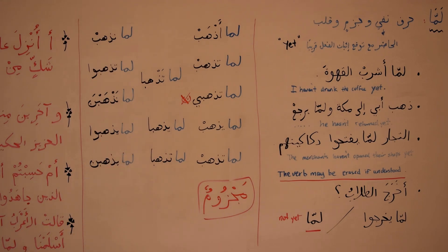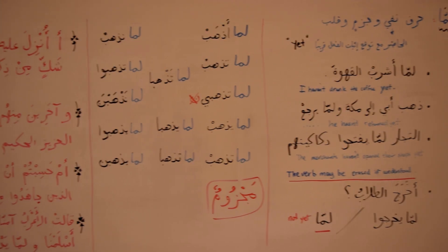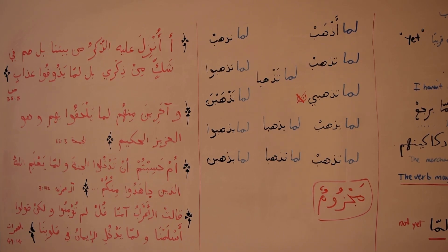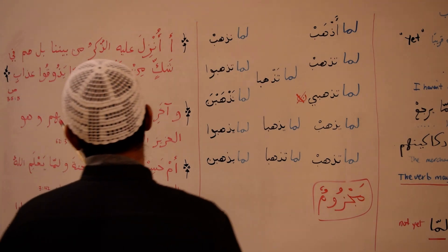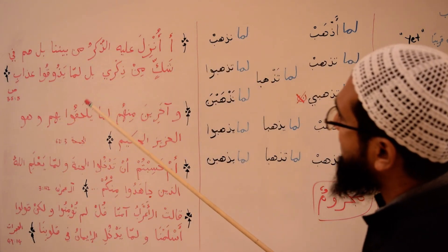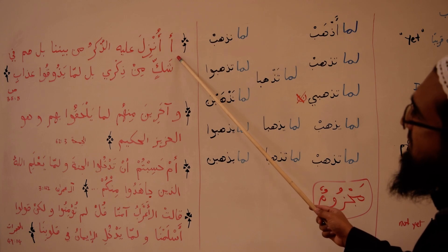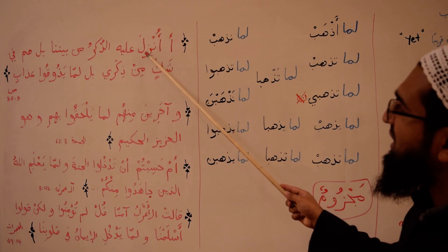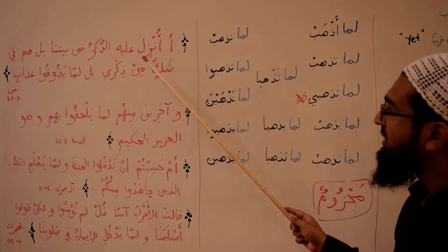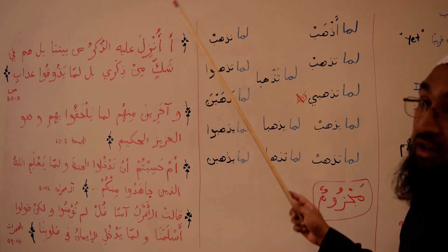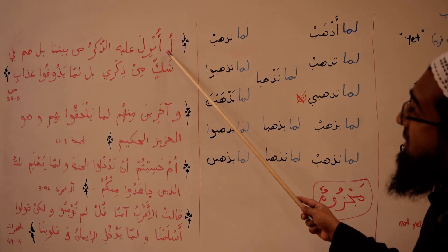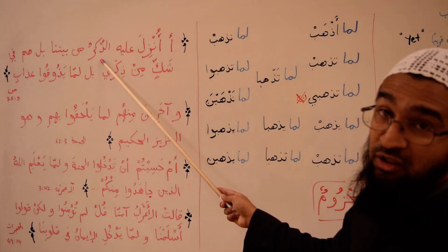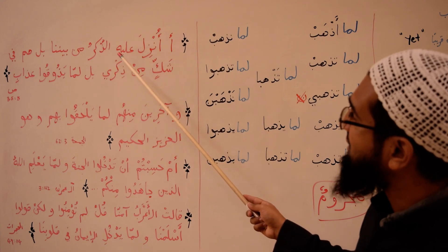Now let's look at some of the verses of Allah in the Qur'an — hopefully we can benefit from it. The first verse is in Surah Sa'd, verse number 8. Allah says: أَأُنزِلَ عَلَيْهِ الذِّكْرُ — this is a question. We haven't really learned this type of verb yet; it will come in the next book inshallah. Has the revelation, the dhikr or reminder, been sent down to him?